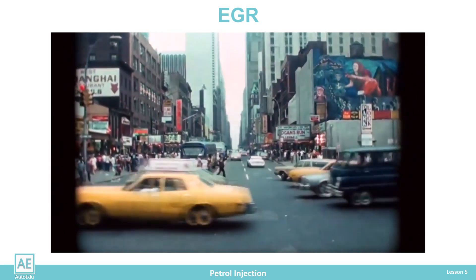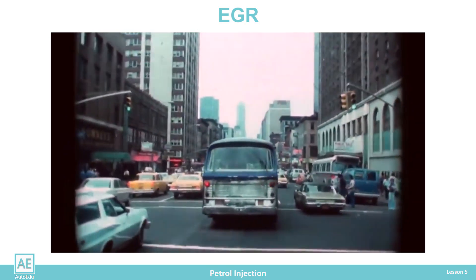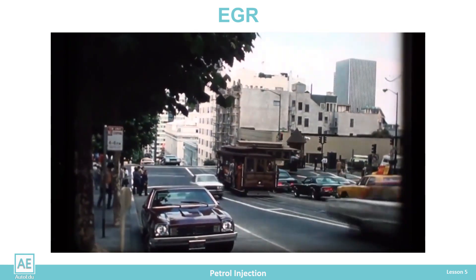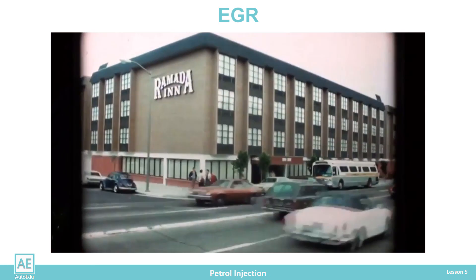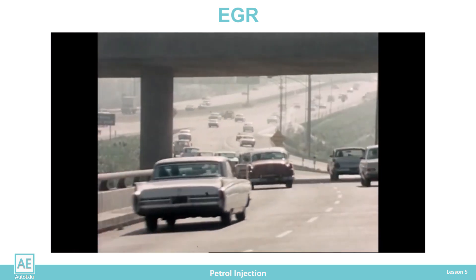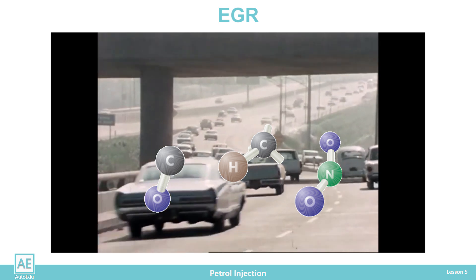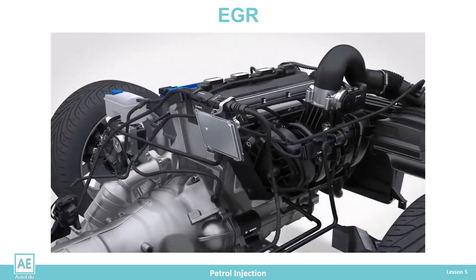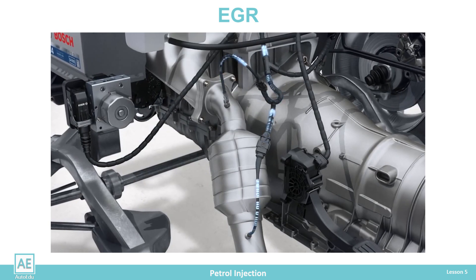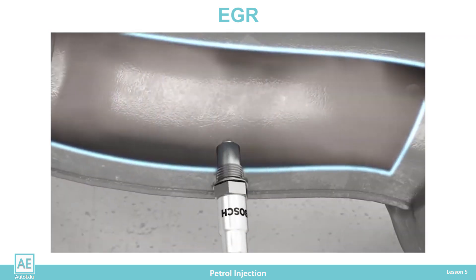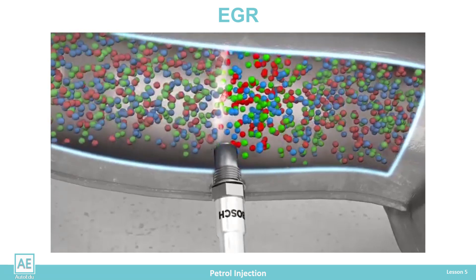In the seventies of the last century, legal regulations appeared whose aim was to reduce the harmfulness of vehicle exhaust emissions. Emission regulations have become more stringent over time and are directly binding on vehicle manufacturers. In the exhaust gas of a gasoline engine, three harmful components are dangerous to health: carbon monoxide, hydrocarbons, and nitrogen oxides. Electronic engine control, fuel injection system, and catalytic converter affect the reduction of exhaust gas emissions, however this is often not enough and additional functions must be introduced.